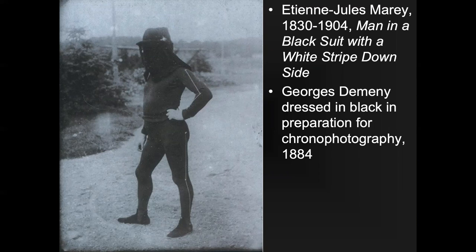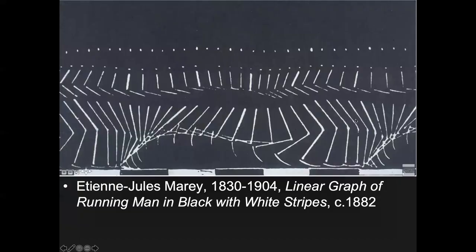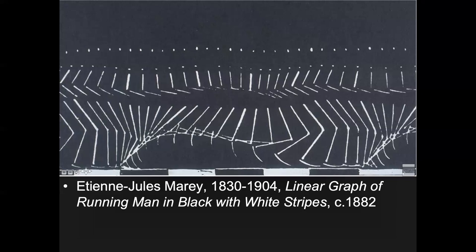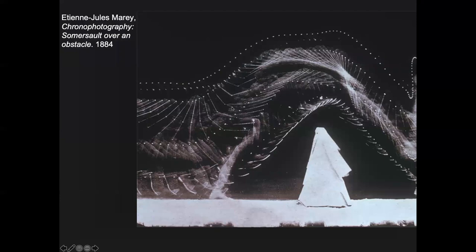With photography, you can't capture the brightest brights and darkest darks simultaneously. Marey took advantage of that limitation — when you expose for the white parts, it filters out all the black. Scientists loved this because they could isolate just the motion information they needed, removing everything else. It also has a cool abstract effect. Even though both Muybridge and Marey were aiming for scientific results, in the late 20th century — long after they were dead — these photographs were displayed in art museums.